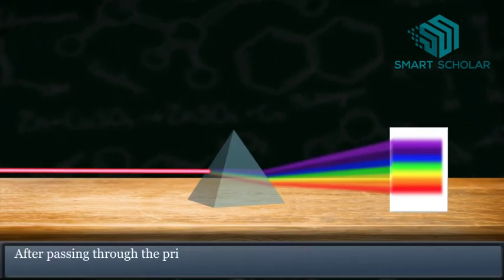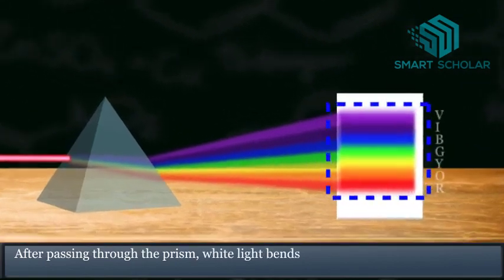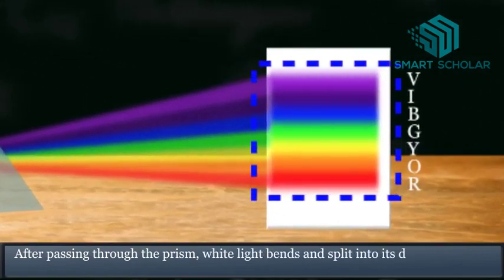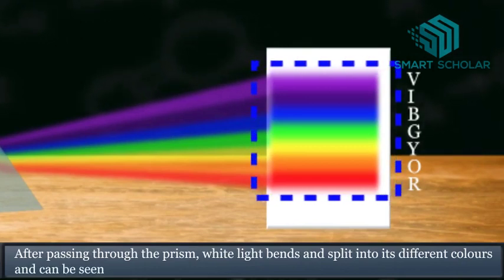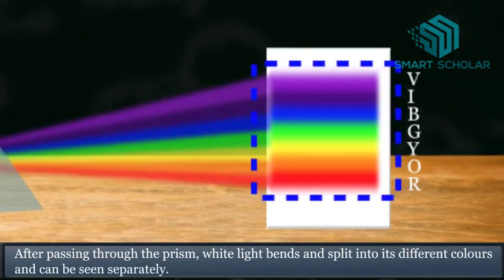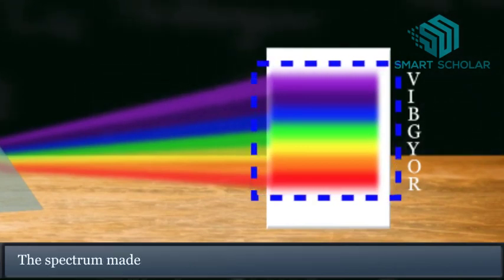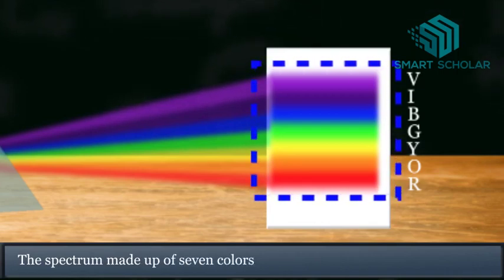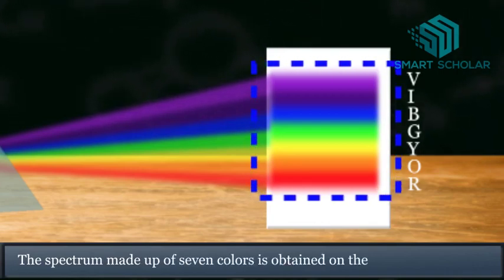After passing through the prism, white light bends and splits into its different colors, and they can be seen separately. The spectrum made up of seven colors is obtained on the white paper.